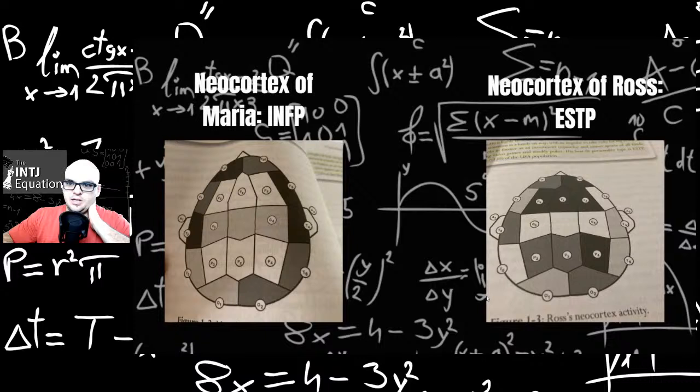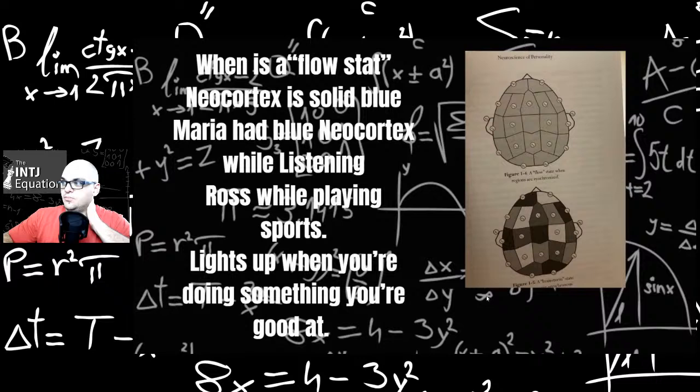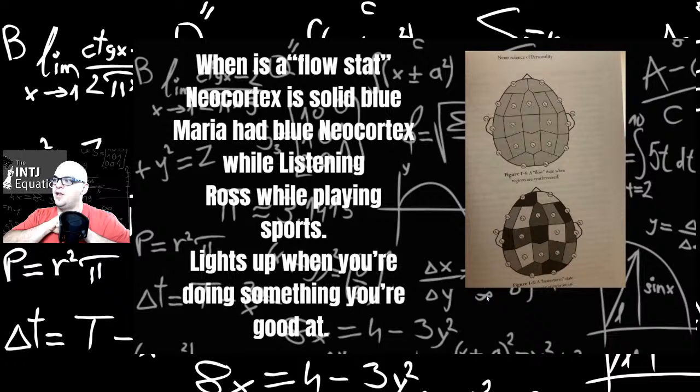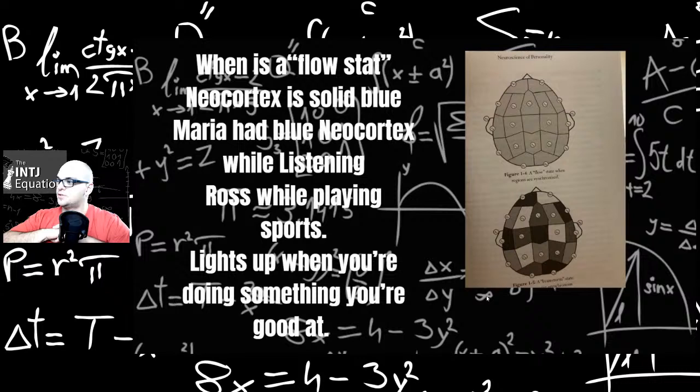Here's the neocortex of both Maria the INFP and Ross the ESTP. The neocortex is the outer layer of the brain that looks like hamburger basically. These are the sections that light up. When is a flow state? In the neocortex, solid blue. It varies by type when they're in this flow state, when the whole neocortex lights up. For INFPs like Maria, it's when she's doing active listening. For Ross, it's playing sports. Lights up when you're doing something that you're good at. But INTJs and INFJs are the exception. Stick around and we'll get to that.